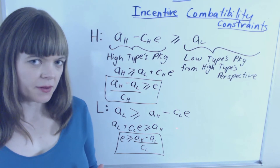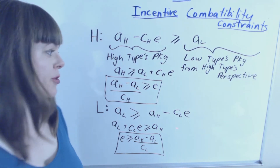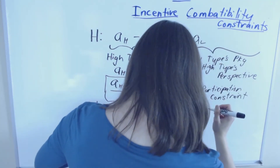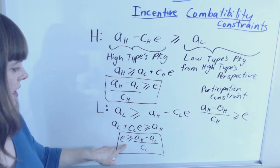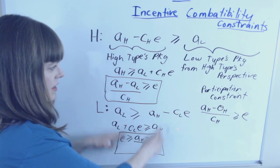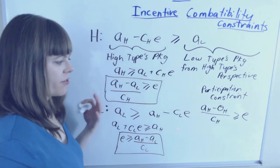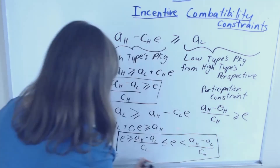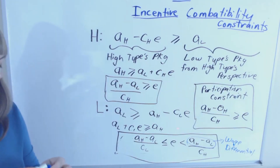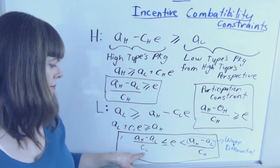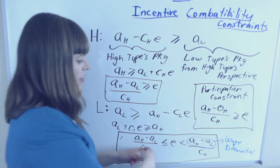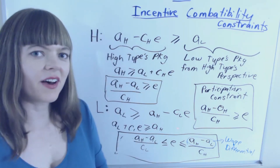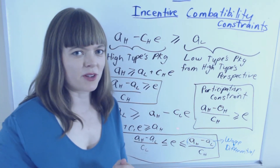Here are our two incentive compatibility constraints, and we can add the participation constraint that involves E as well, giving us three constraints. This tells us that E needs to be greater than a lower bound and less than two upper bounds. If we'd like a single clean constraint, we can combine these. Since we know the cost of education for the low skill type CL is higher than for the high skill type CH, there will be some distance between the two inequalities. And that's how you solve an incentive compatibility and participation constraint problem.